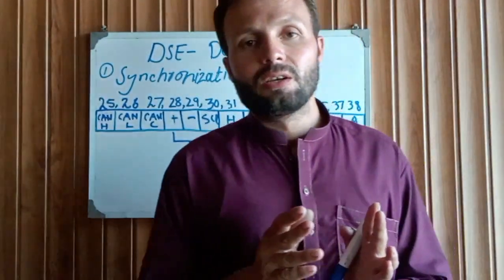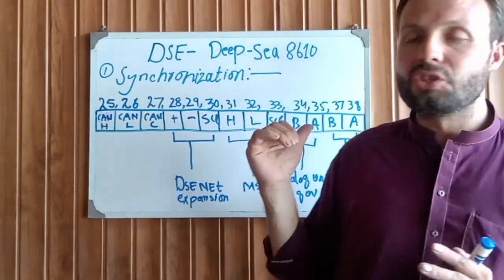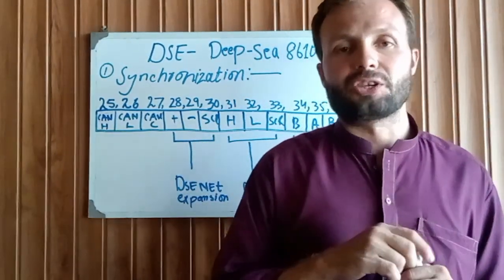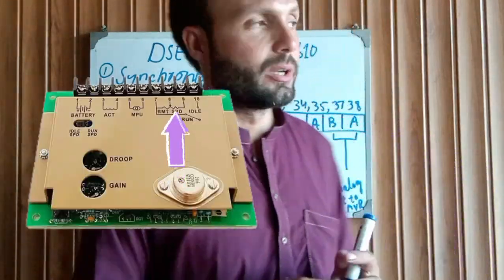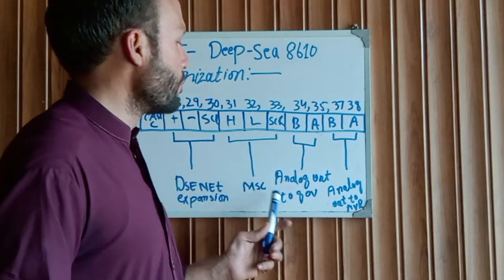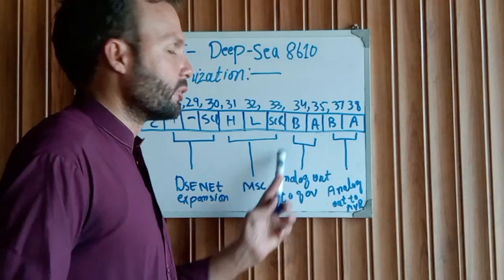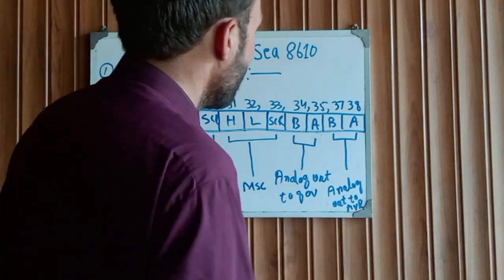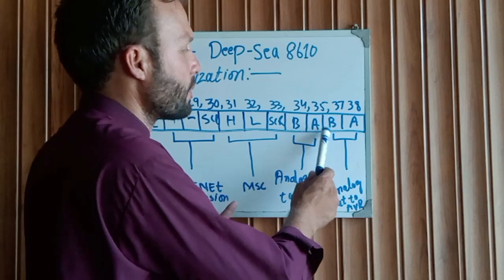This DC supply is going to our governor potentiometer place, which we control remotely. Put these two wires on your governor potentiometer terminal connection, which is sometimes used for remote control operation. Remove the remote control operation and connect these two output wires from the DSE 8610 to your governor potentiometer or governor control card potentiometer.